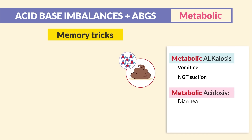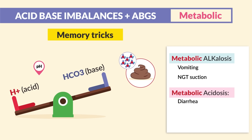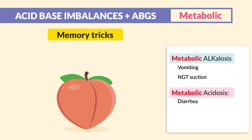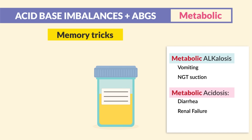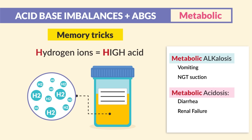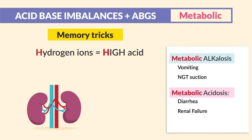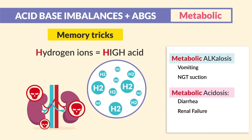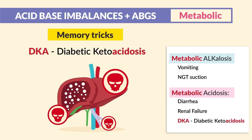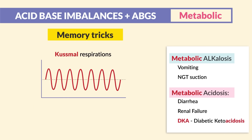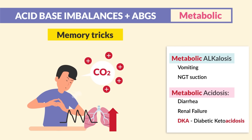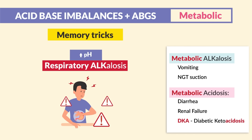For metabolic acidosis, we have diarrhea, renal failure, and DKA — diabetic ketoacidosis. For diarrhea, you poop out all of your base, leaving the body in acidosis. Memory trick: if base comes out of your butt, you're only left with acidosis. In renal failure, you retain too much urine — urine is an acid from high hydrogen ions. Memory trick: if your kidneys fail, then acid prevails. DKA even has the word acidosis in the name. These clients try to compensate with Kussmaul respirations — rapid breathing and hyperventilation — to breathe out that acid via CO2 to try to get into alkalosis.